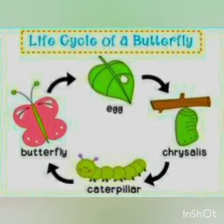Now we will look at the following stages of the butterfly life cycle. There are four stages, and this process is known as metamorphosis. The first stage is egg, the second is larva or caterpillar, the third stage is pupa or chrysalis, and the fourth and last stage is the adult butterfly.